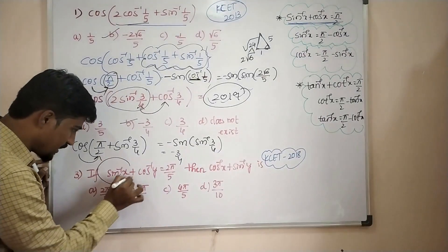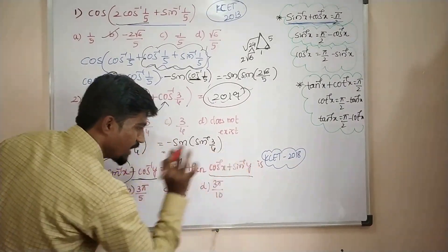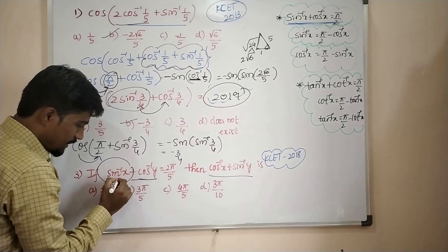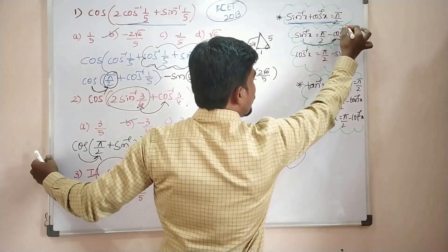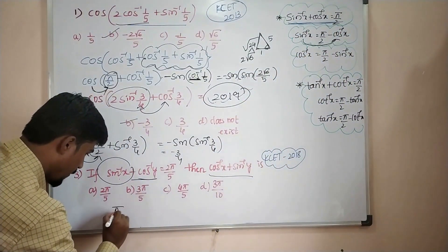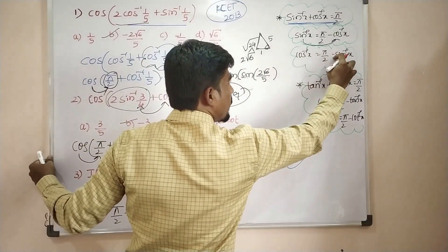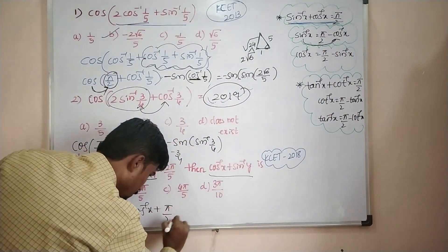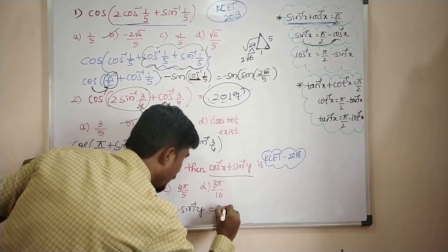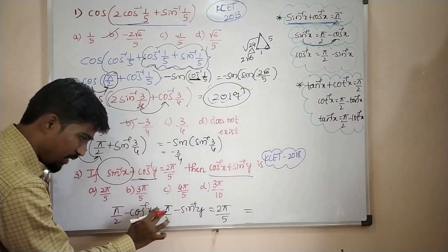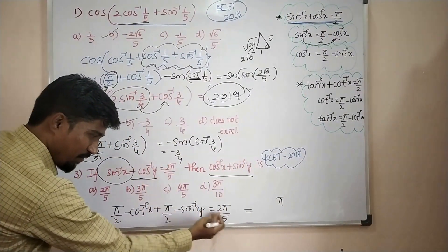If sin⁻¹x + cos⁻¹y = 2018π/5, then find cos⁻¹x + sin⁻¹y. Now, sin⁻¹x = π/2 − cos⁻¹x. Substituting: (π/2 − cos⁻¹x) + cos⁻¹y + (π/2 − sin⁻¹y) = 2018π/5. That equals 2π/5, and π/2 + π/2 = π. So we have π − (cos⁻¹x − cos⁻¹y + sin⁻¹y) = 2018π/5. Now: π − 2018π/5 gives us 4π/5.